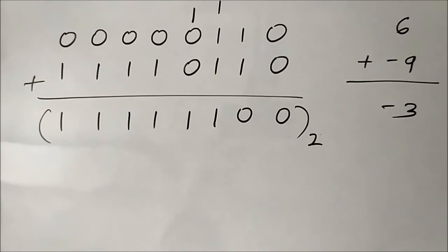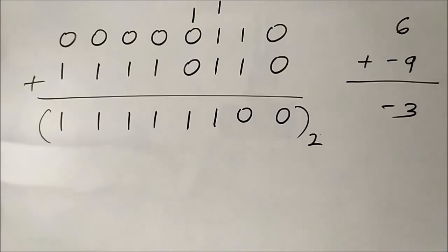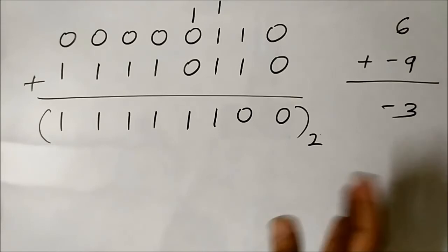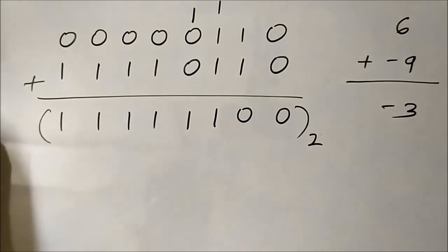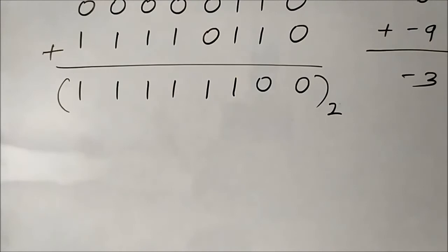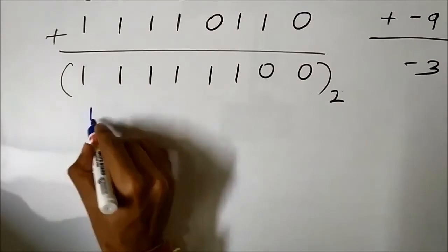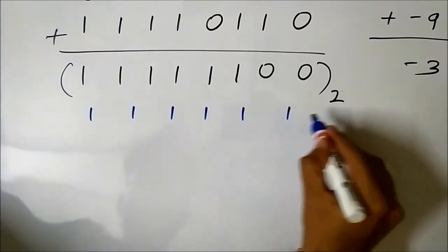Now let us find the decimal value to confirm the result is minus 3. I have posted a video about converting a signed binary number to its decimal equivalent using 1s complement — please check that out. The result has six 1s and two 0s, and we assign weight values 2^0 through 2^7 to the respective bit positions.